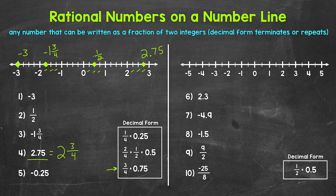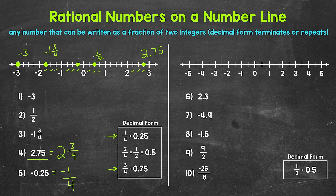For number five, we have negative 0.25, which equals negative one fourth in fractional form. Negative one fourth is to the left of zero, between zero and negative one. We have negative one fourth, negative two fourths (negative one half), and then negative three fourths. So negative one fourth, or negative 0.25, is right here.